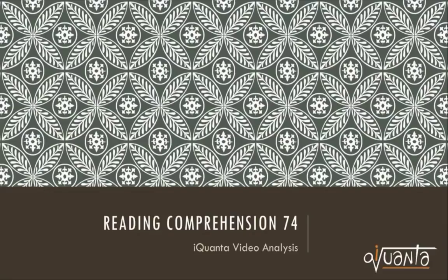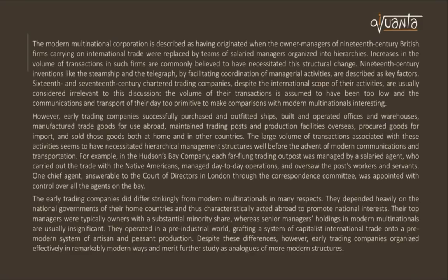This is reading comprehension 74, an iQuanta video analysis. The modern multinational corporation is described as having originated when the owner-managers of 19th century British firms carrying on international trade were replaced by teams of salaried managers organized into hierarchies. Earlier, prior to the 1800s, the owner used to be the manager, but thereafter owners kept professional salaried managers who had no ownership in the company, organized into a hierarchy with a general manager and managers for every trade unit.